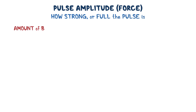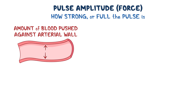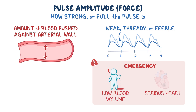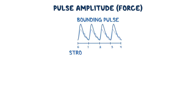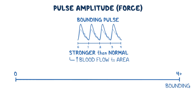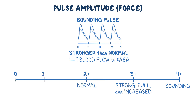Pulse amplitude, or force, refers to how strong or full the pulse is and reflects the amount of blood pushed against the arterial wall with each heartbeat. A weak, thready, or feeble pulse is typically considered an emergency, indicating low blood volume or serious heart problems. A bounding pulse indicates increased blood flow. Amplitude is graded on a scale of zero to four plus: four plus is bounding, three plus is strong and full, two plus is normal, one plus is diminished and weak or thready, and zero means the pulse is absent or not palpable.